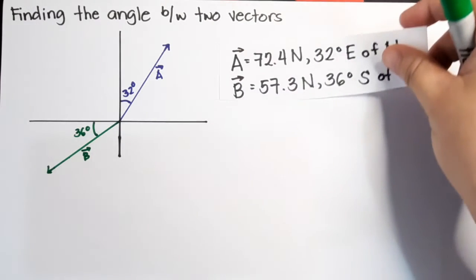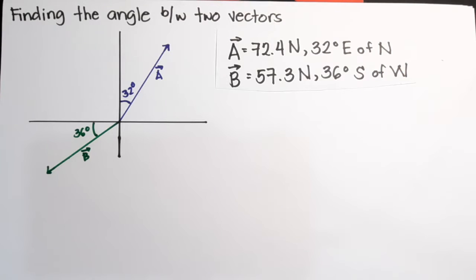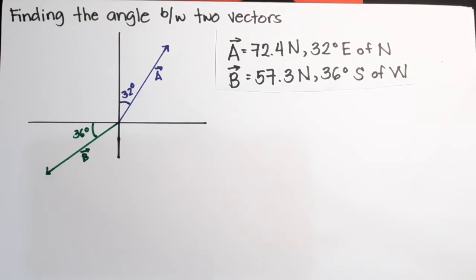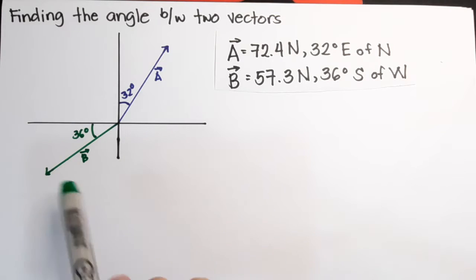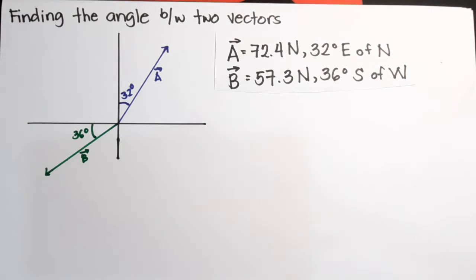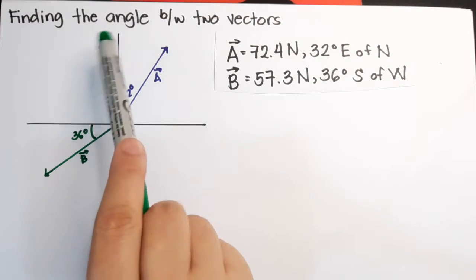As you can see, these are the vectors that we used from our previous lecture. I have here vector A, 72.4 N, 32 degrees north of east, and I also have vector B, 57.3 N, 36 degrees south of west. But this time, I didn't connect them using the head-to-tail method, but I put vector B from the original axis where vector A is also connected. Usually, we know only the angle of these vectors referenced to an axis.